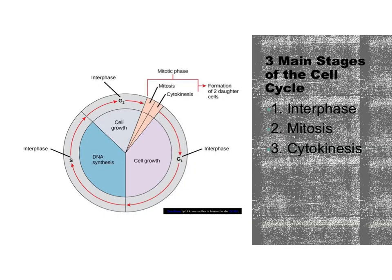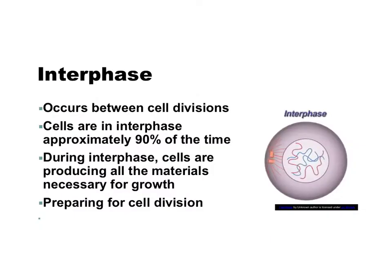There are three main stages of the cell cycle. The first stage is called interphase, the second stage is mitosis, and the third stage is cytokinesis. Interphase occurs between cell divisions, and cells are in interphase approximately 90% of the time. During interphase, the cell grows and develops into a mature functioning cell, produces all the materials necessary for growth, and the duplicating of the DNA begins.